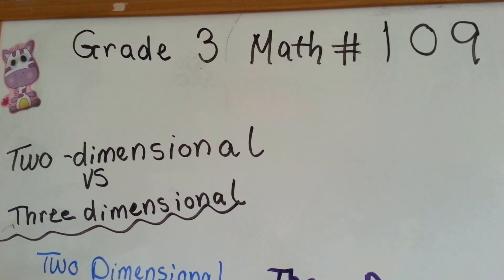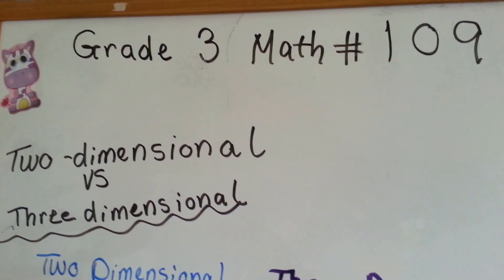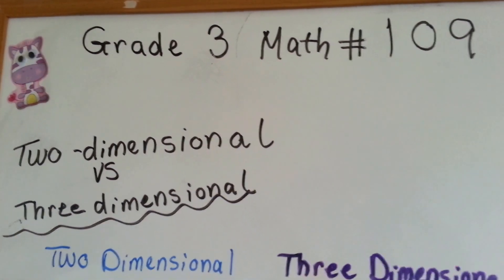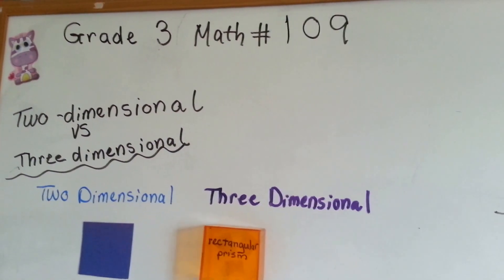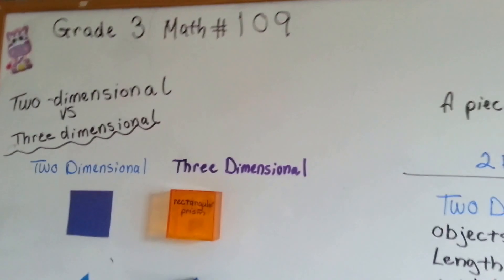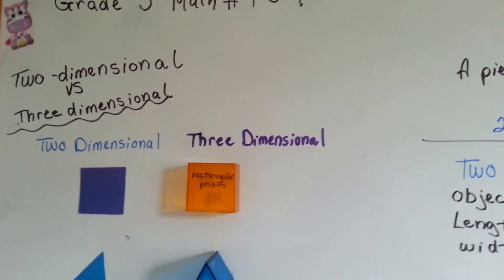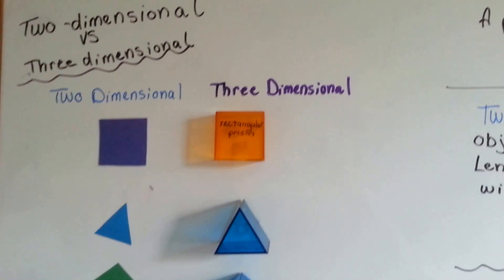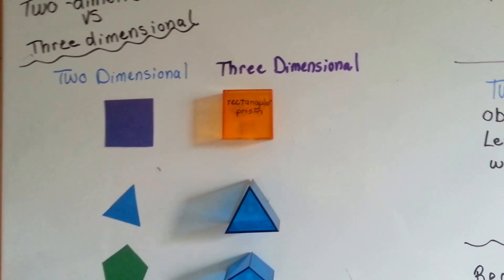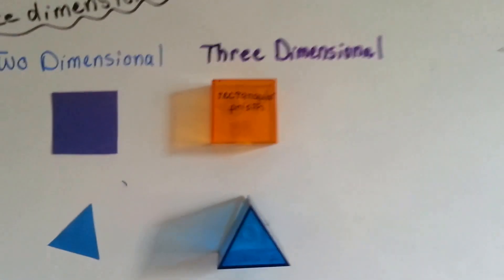Grade 3 math number 109, two-dimensional versus three-dimensional. Without getting into too long of a scientific explanation of all the different dimensions, I'm just going to talk about two-dimensional objects and three-dimensional objects. Now, I've got both types here on my board, and I'm going to show you the difference.